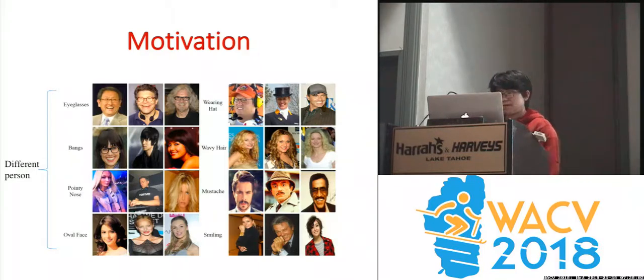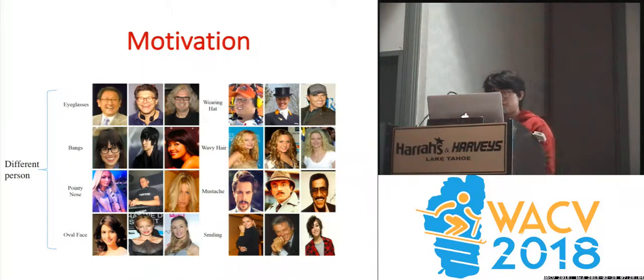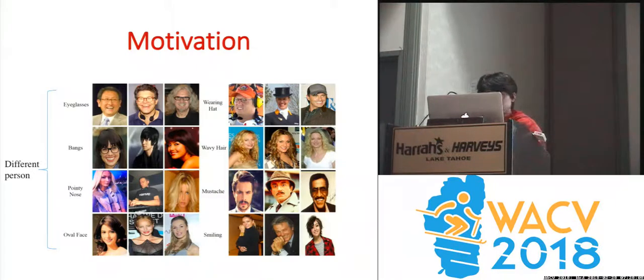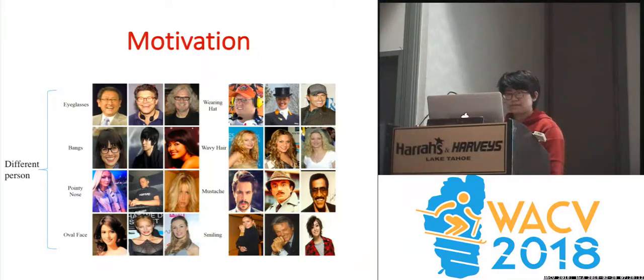For instance, if we have several training samples for one person, when a test image comes in and it has totally different facial attributes — such as wearing glasses — the trained model may be easily fooled.